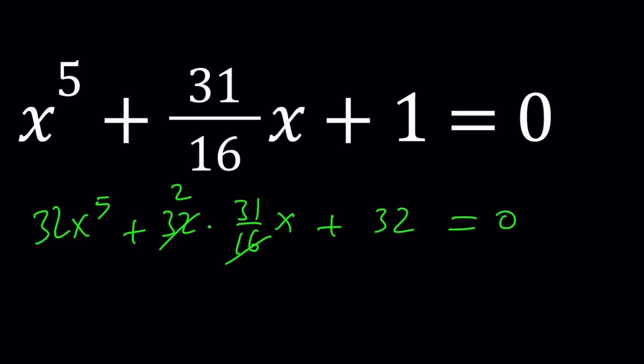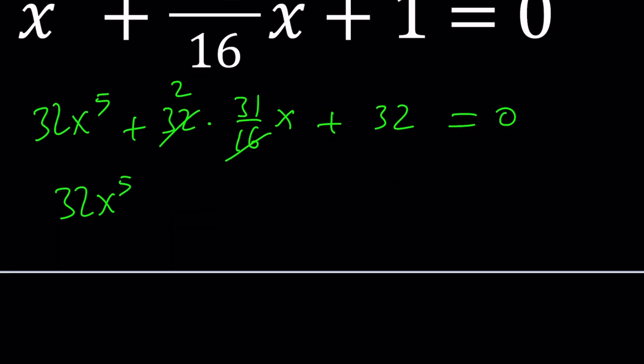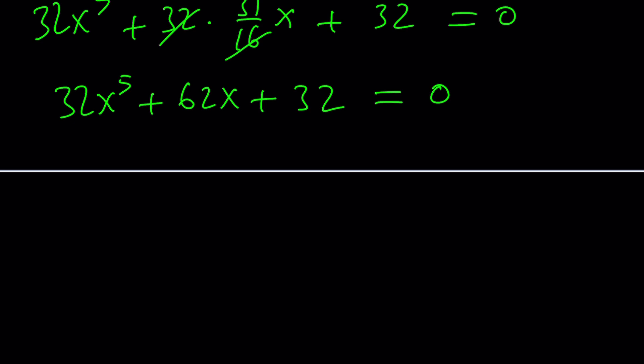After multiplying, we get 32x to the fifth power plus 62x plus 32 equals 0. What a nice equation. There seems to be some symmetry, but that's not the case. Because 32 is a fifth power, I can write 32x to the fifth as 2x to the fifth power. And following the same pattern, I multiply by 31, and 32 is a constant.